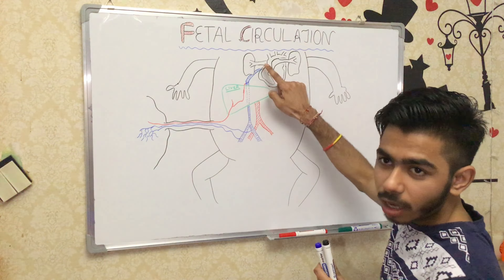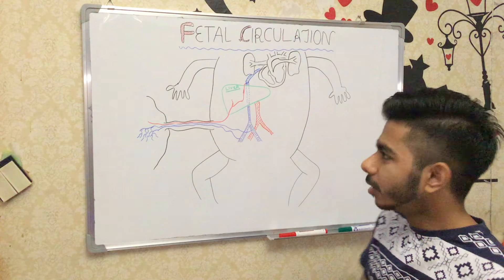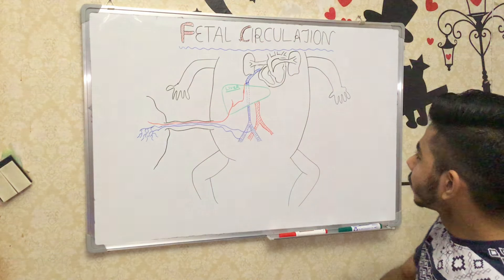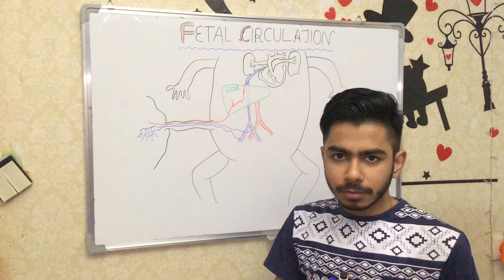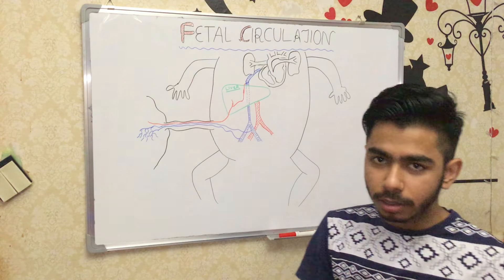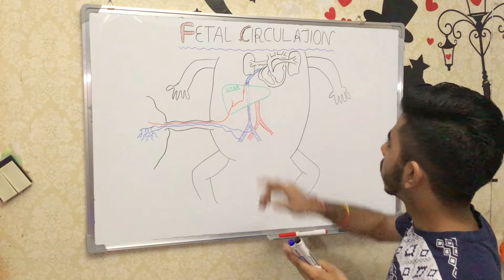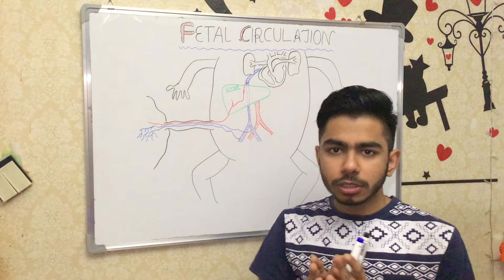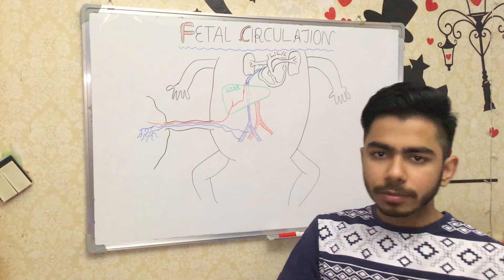In adult circulation, the superior vena cava from the upper side and the inferior vena cava from the lower side both drain into the right atrium. From there, blood goes into the right ventricle through the tricuspid valve, and from the right ventricle it goes into the pulmonary artery, which goes to both lungs. This is deoxygenated blood.